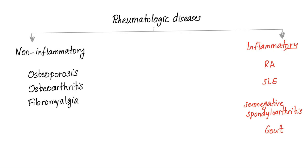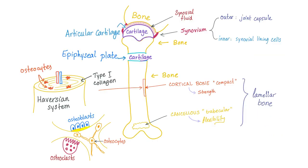We can classify rheumatologic diseases into non-inflammatory and inflammatory. Non-inflammatory includes osteoporosis, osteoarthritis, and fibromyalgia. Inflammatory includes rheumatoid arthritis, lupus, seronegative spondyloarthritis, and gout.